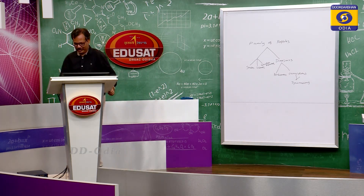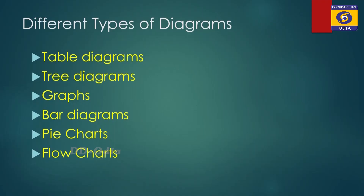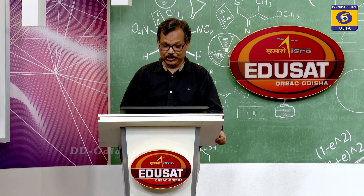Now, how many types of diagrams are there? Firstly we have table diagrams, then we have tree diagrams — I have shown you an example here — then we have graphs, then bar diagrams and pie charts, and finally flow charts. Dear students, I am not going to deal with flow charts here because they are not in your syllabus.